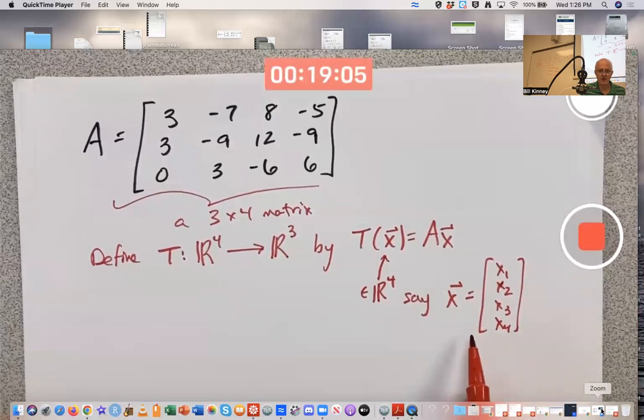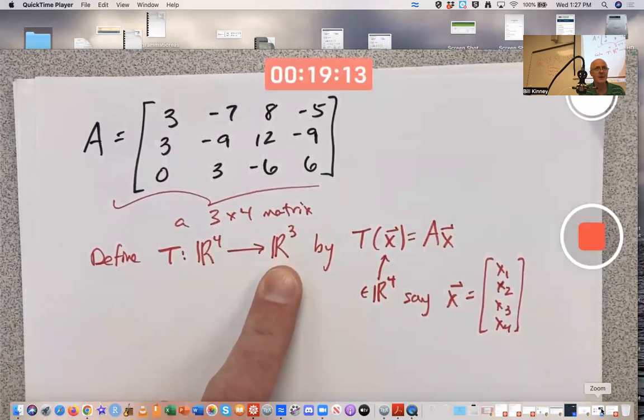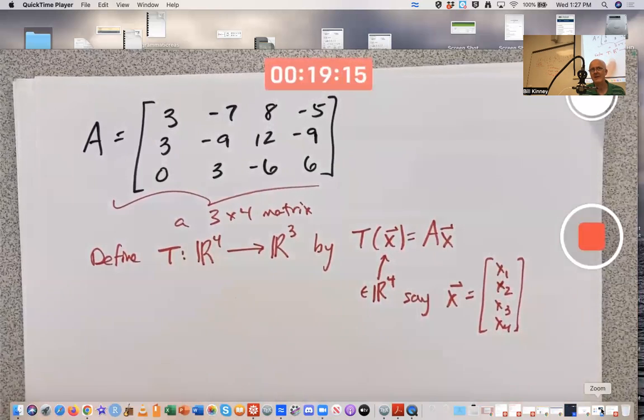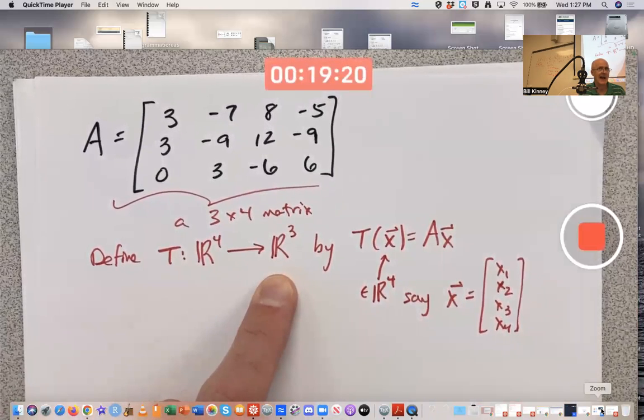That input vector is four-dimensional. That's why the domain is four-dimensional. This notation means T is a function with this set as its domain and this set as its codomain. T is mapping vectors in four-dimensional space to three-dimensional space. How? It's like the test question.